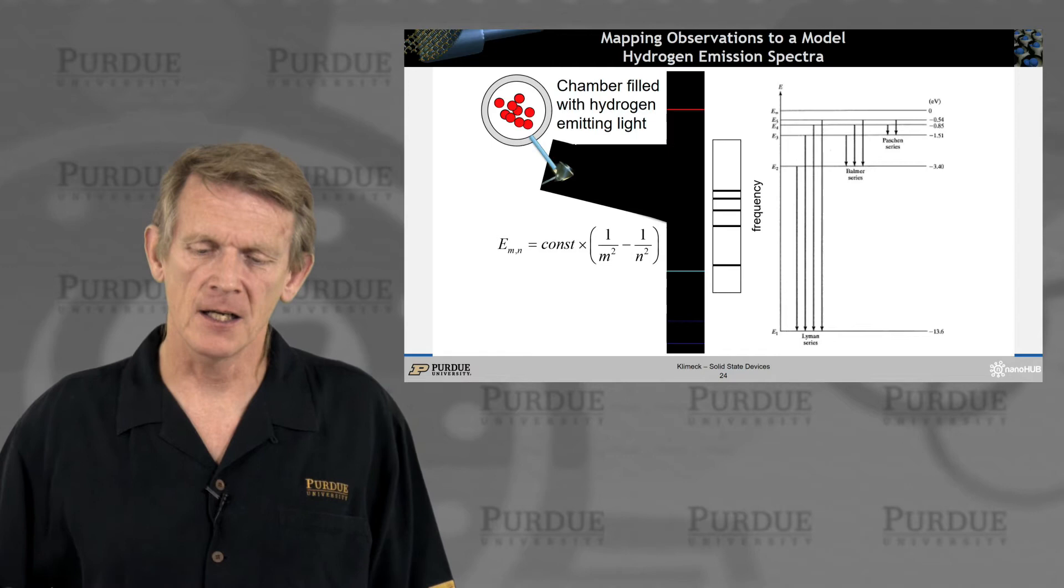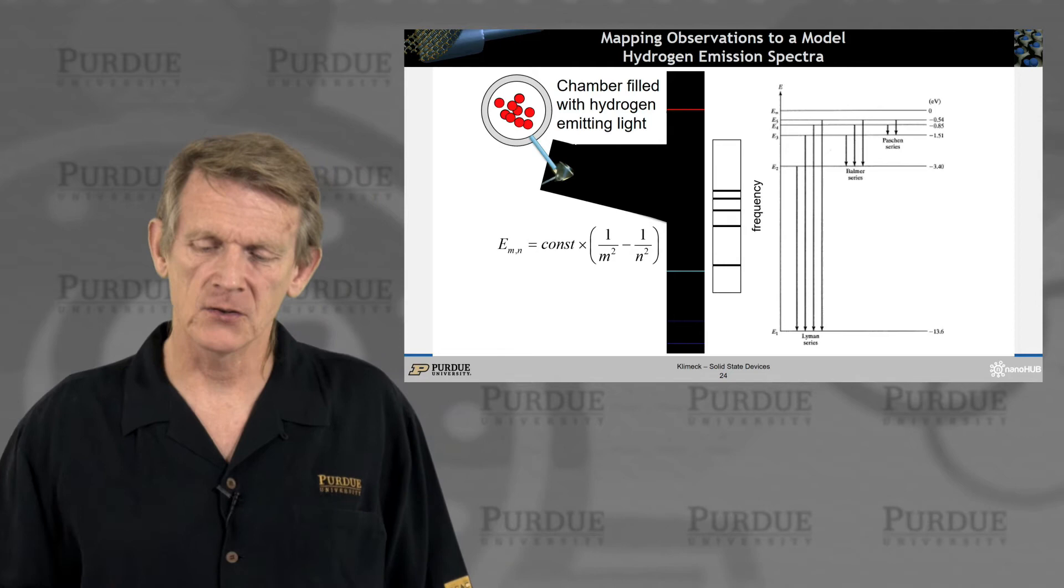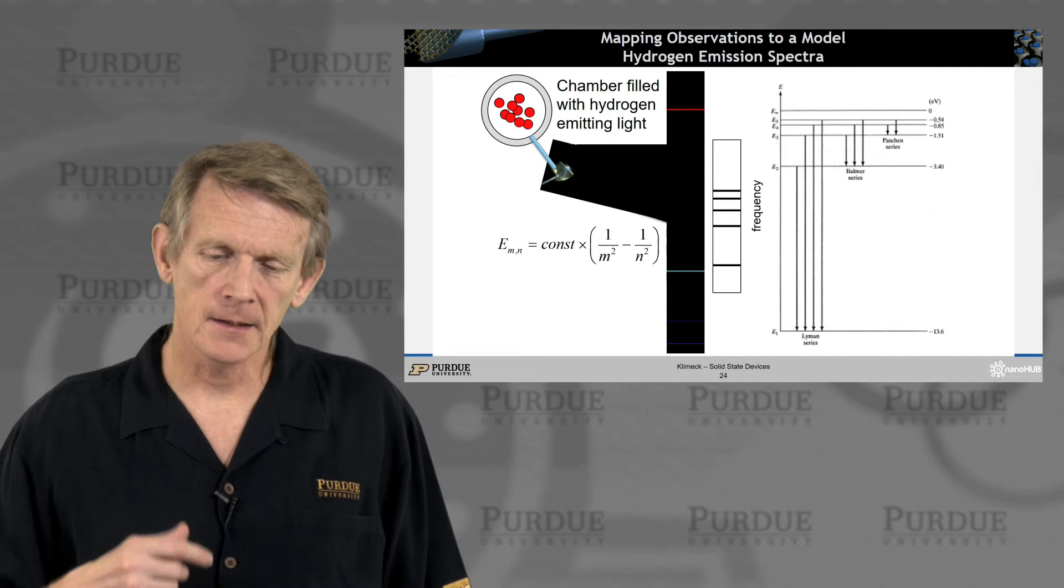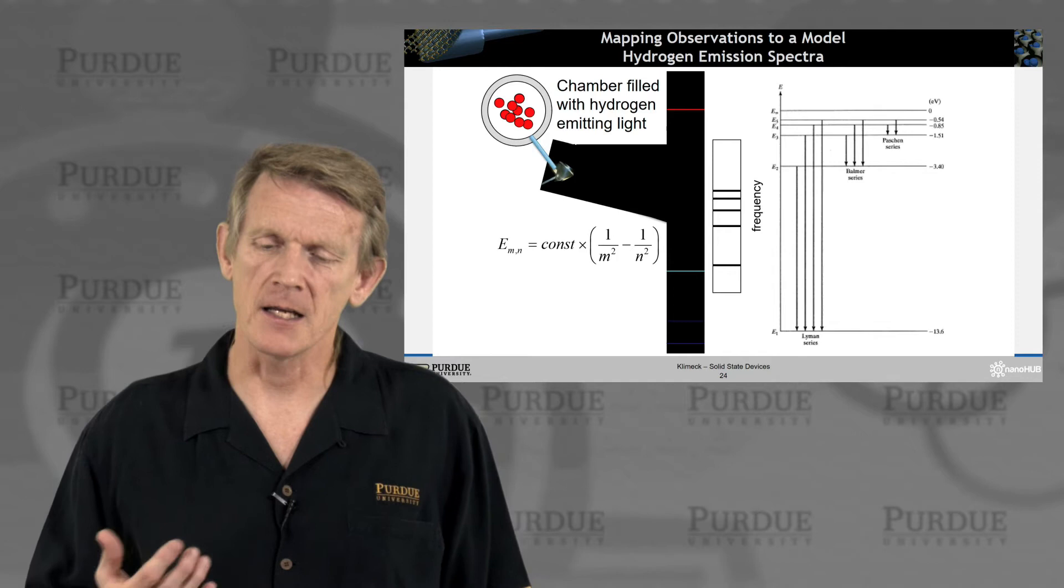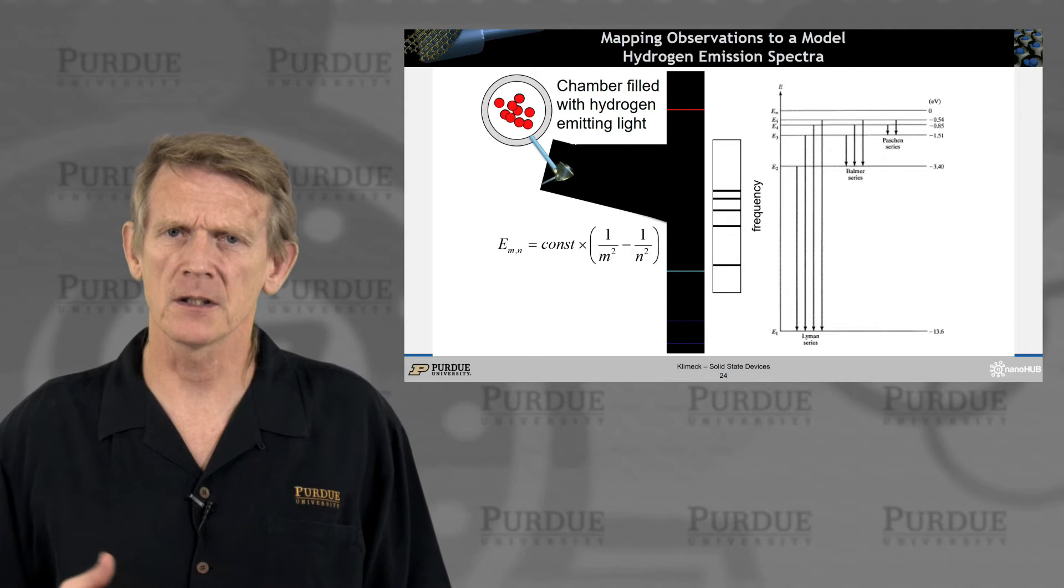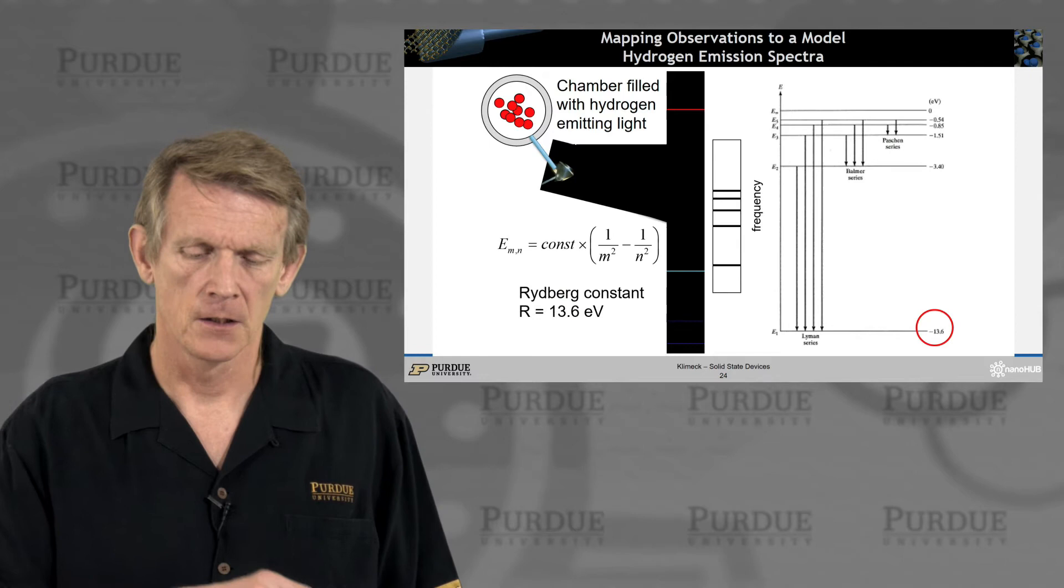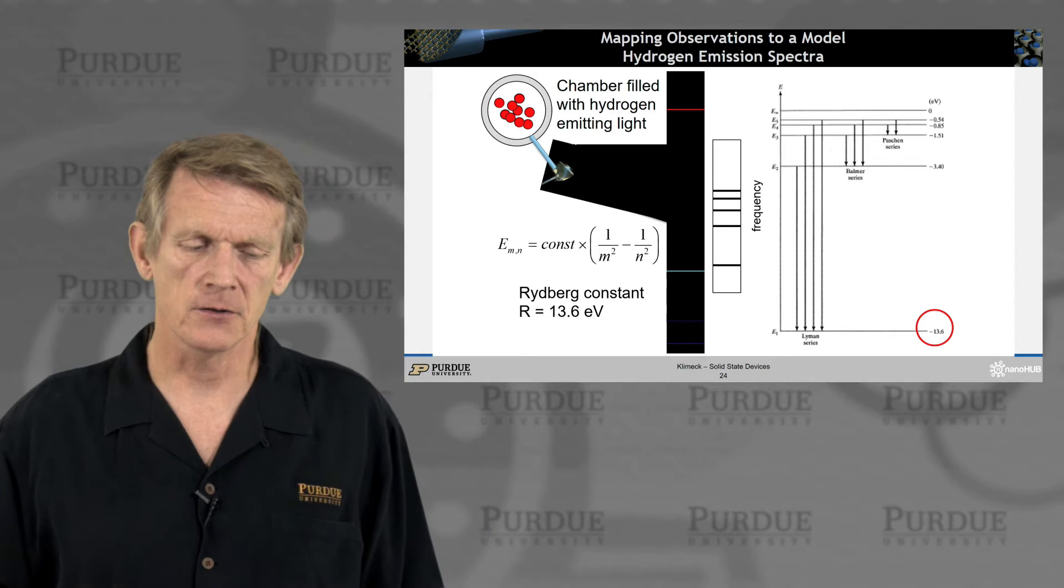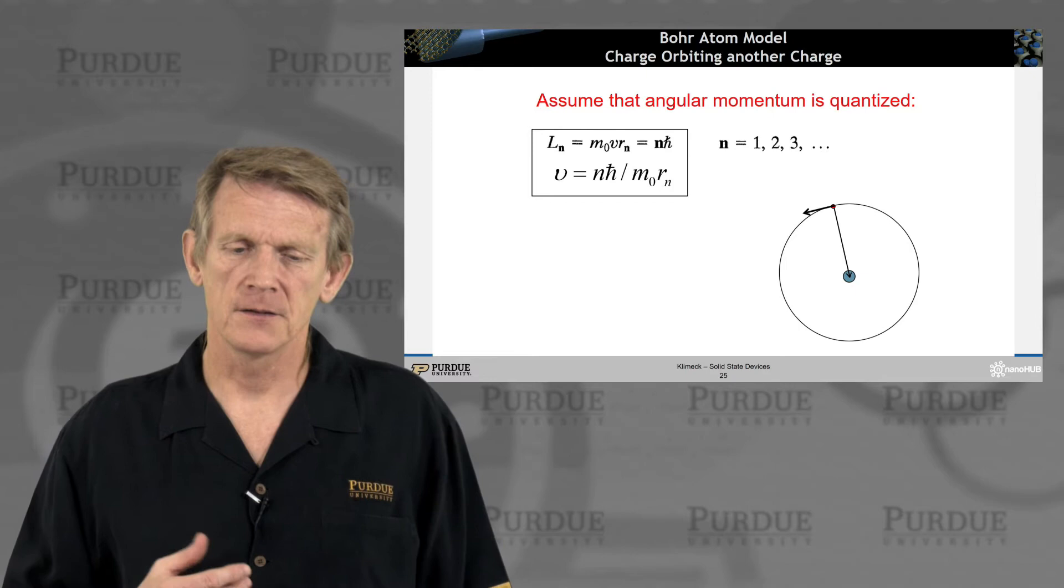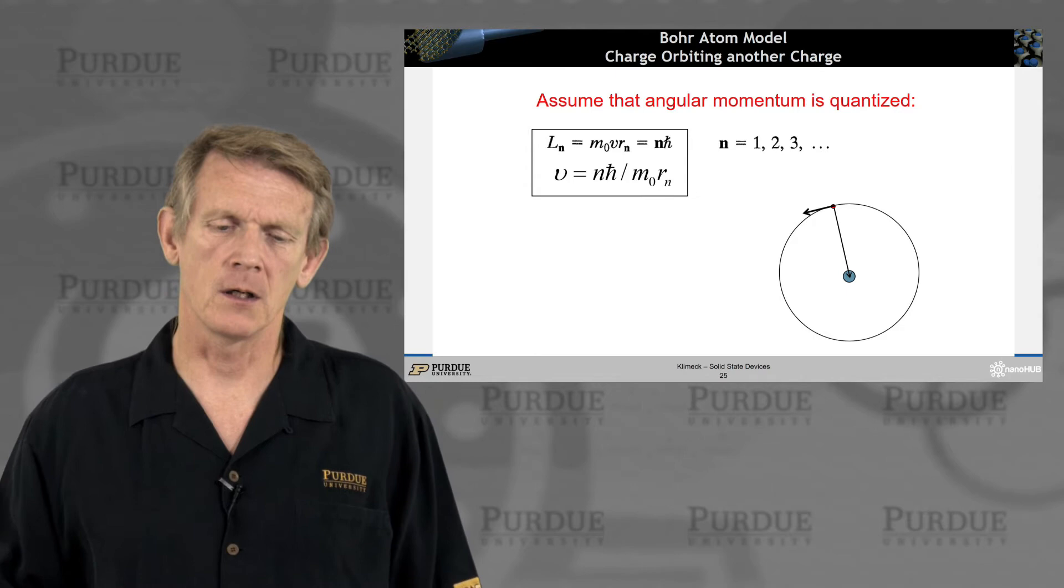So these are different series of observations people have made, and that interpretation can be seen here on the right, where there's a lowest-lying level at minus 13.6 eV, and then you have a series of lines of integers connecting to this n equal 1. And then there's other series that connect to intermediate states or lines. People that observed them gave them the names of the Lyman series, the Balmer series. So these are old experiments that occurred before the advent of quantum mechanics. That constant then turns out to be 13.6 eV electron volt, and that is the Rydberg constant.